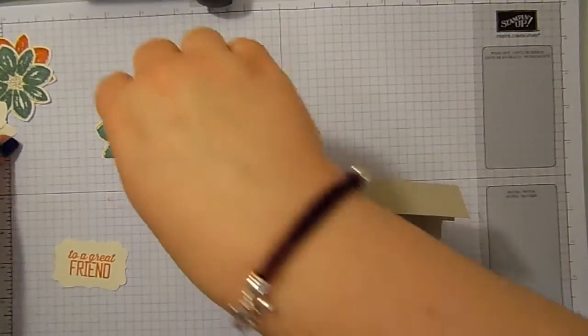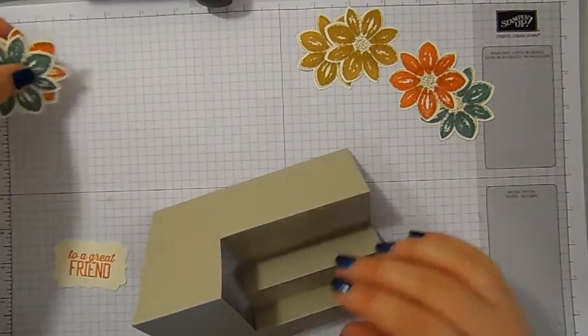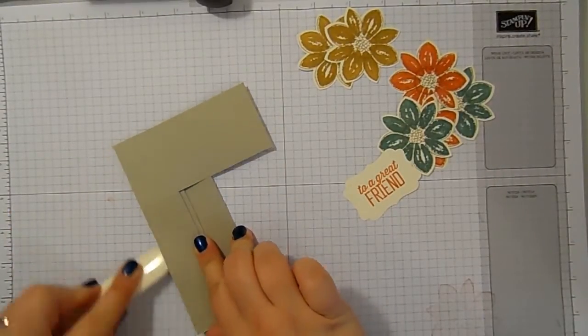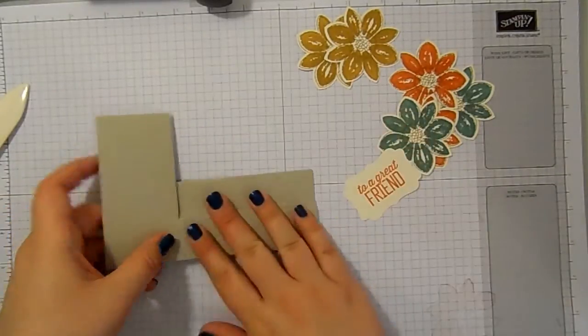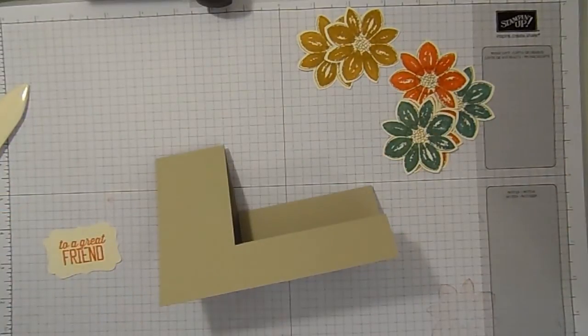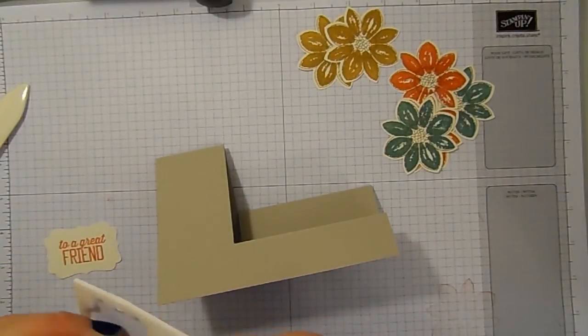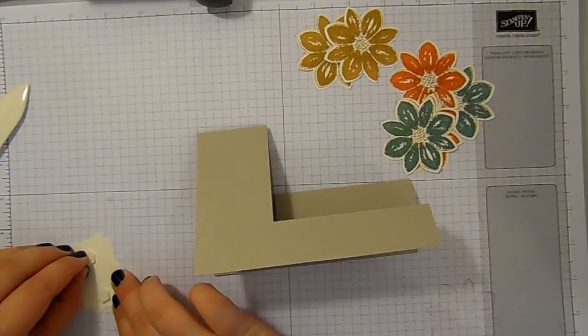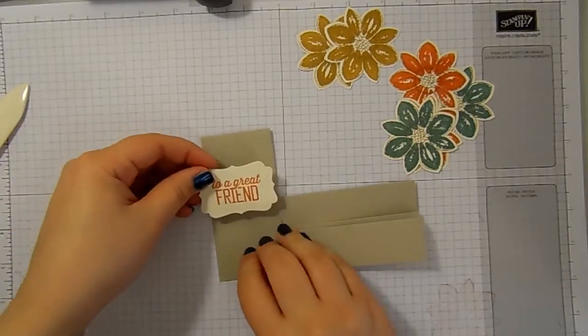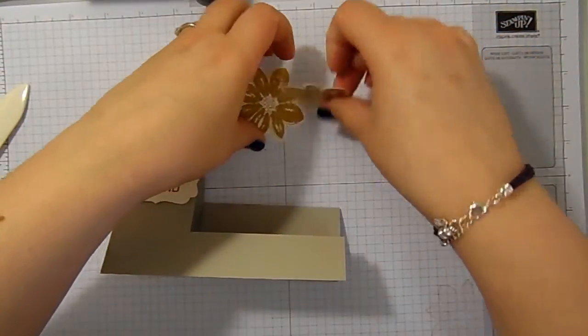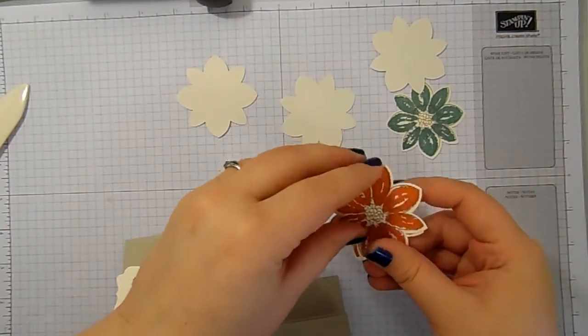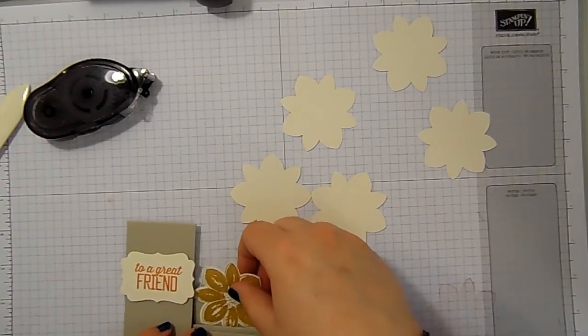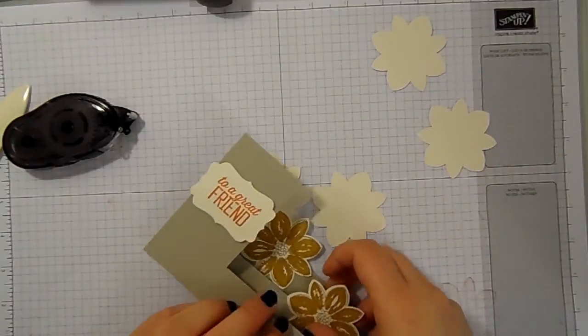And then all we've got to do is arrange our flowers onto our sidestepper. You need to make sure that they're all burnished through, otherwise it does tend to sort of splay. But that's not too much of a problem. So I've got some dimensionals that I'm going to stick the sentiment on with. Just there. And then I'm just going to use Snail to attach these flowers. You could just as easily use Fast Fuse or Glue Dots or Liquid Glue. I just want to put a little bit of glue on the bottom.